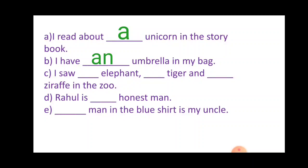C number: I saw dash elephant, dash tiger and dash giraffe in the zoo. So it will be before E, it will be an. A-E-I-O-U, before vowel sounds and vowel letters we use an. So an elephant, a tiger and a giraffe in the zoo.